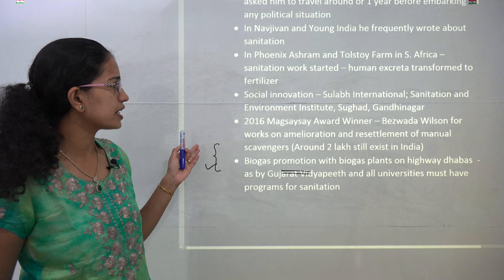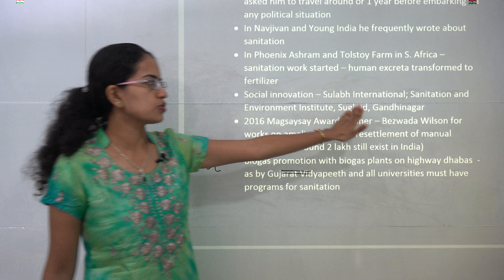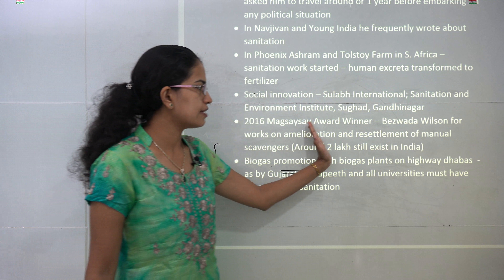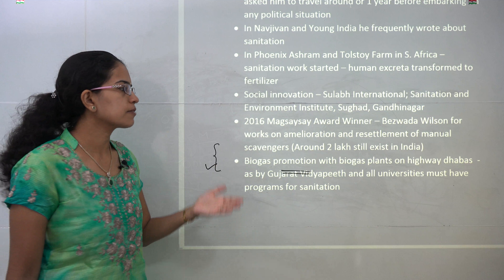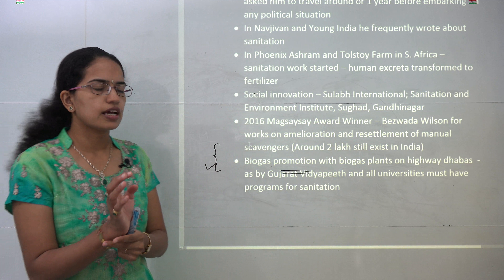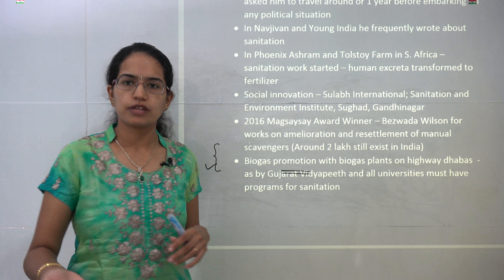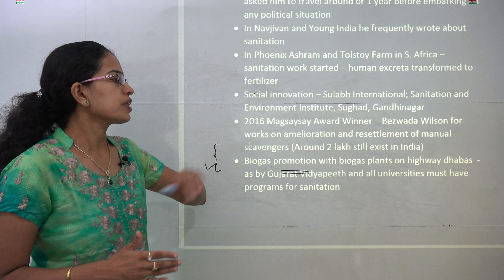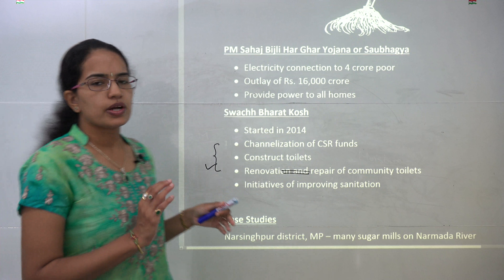Gandhi's concerns started in South Africa, where he was exposed to English settlements and learned how important sanitation is, recognizing that villages were the actual hubs needing attention. Gopal Krishna Gokhale, his political guru, explained that before working on any issue, one should devote at least one year researching it. Based on that, Gandhi researched for years and concluded sanitation was one of the major issues in villages — a theme he frequently wrote about in Navjivan and Young India.